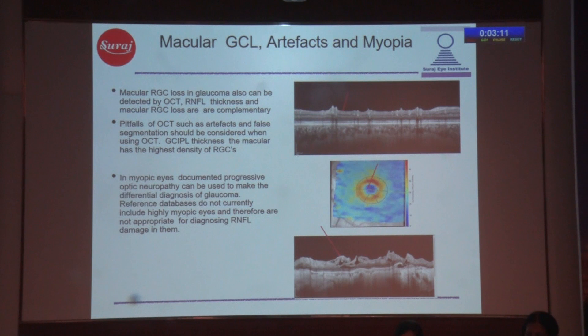In myopic eyes, we also have difficulty with the retinal nerve fiber layer. You can see this photograph of a high myope with significant retinoschisis, which is not uncommon in high myopic eyes. The segmentation is not going to be regular, and therefore you have difficulty with these patients.